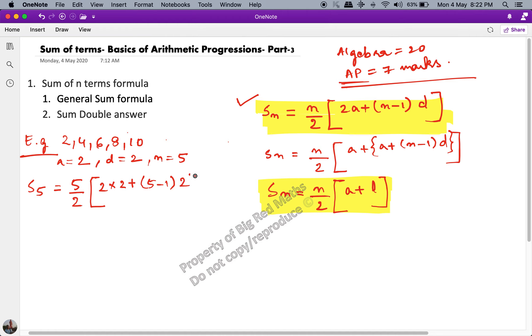This is equal to 5 by 2 into 12, so you get 5 into 12 by 2, which is equal to 30.